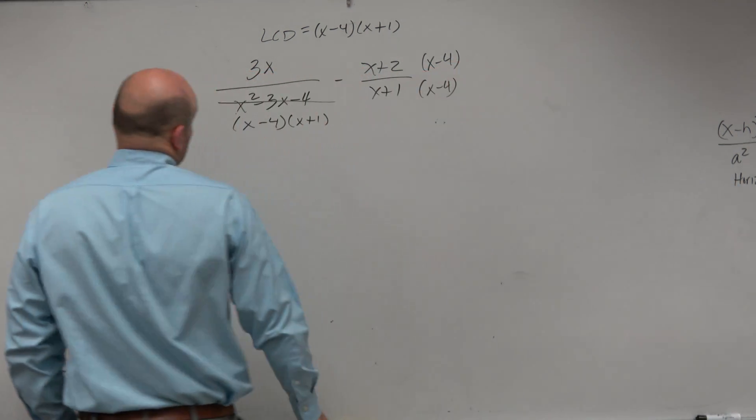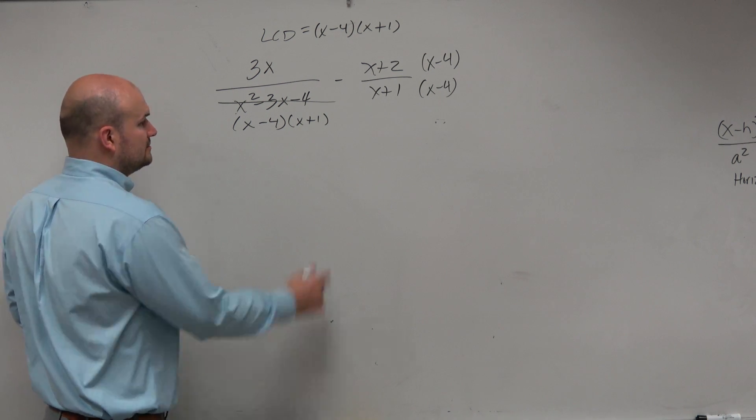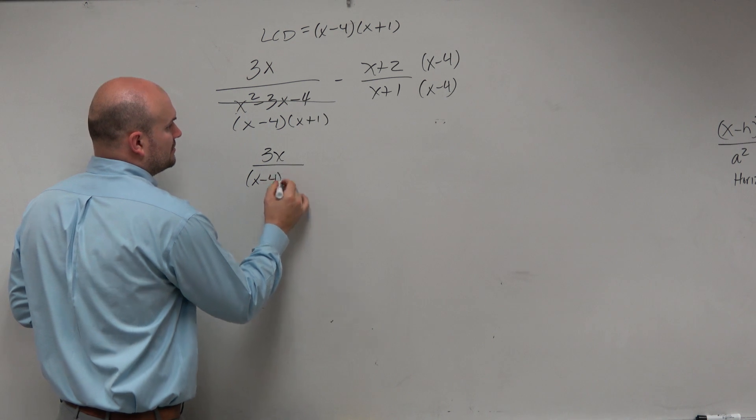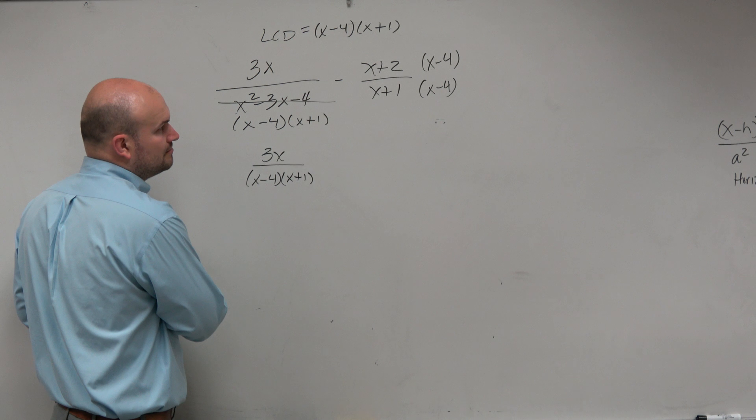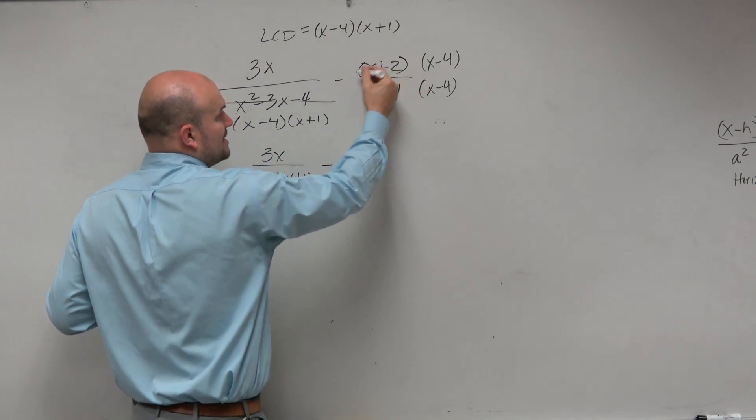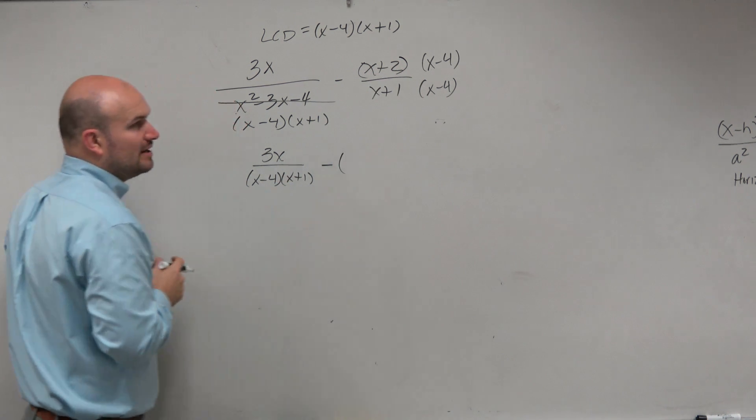Now, this one can be a little tricky, because there's a couple things we could do here. If I rewrite this, if I wanted to simplify my numerator, a lot of people will start making mistakes with this. So I'm going to leave this as a negative. Now what I'm going to do is I'm going to multiply this out, but I'm going to put it in parentheses, my product.